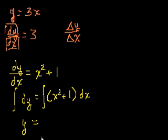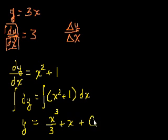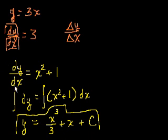What's the antiderivative of x squared plus 1? Well, it's x to the third over 3 — we're just taking the derivative backwards. Plus x. And then plus c. Where does the c come from? When we take the derivative of a constant, it goes to 0, so when you take the antiderivative, there could have been a constant there. That's where the plus c comes from. So this is the general solution to this differential equation.